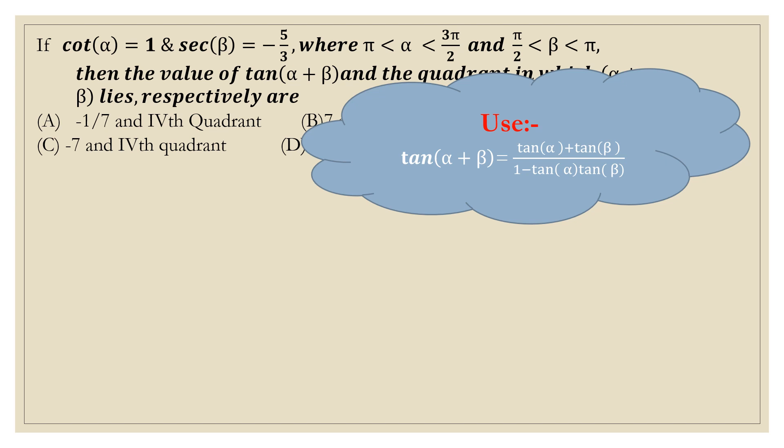I am giving you one hint. You have to use tan(α + β) equals tan α plus tan β by 1 minus tan α into tan β. If you are able to solve it on your own after getting this hint, please comment in the comment box. Else watch this video.